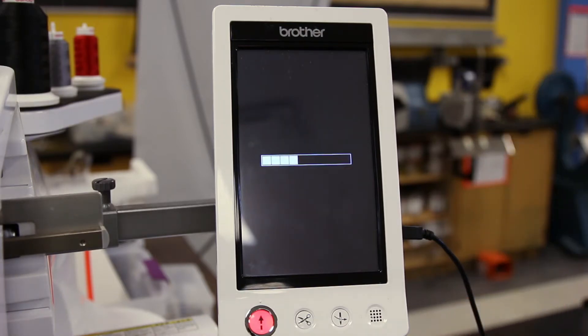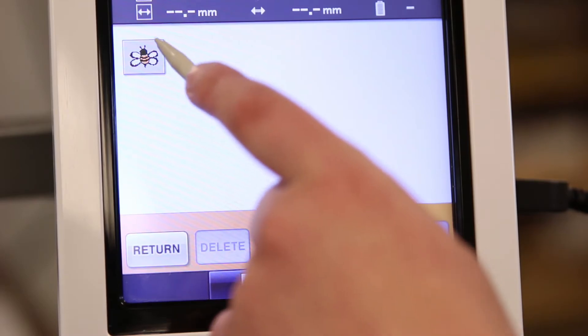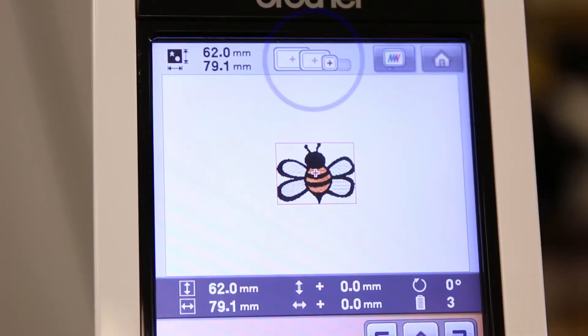Now that the design is on the machine, we can start by making the physical patch. Select and size the patch, noting the size of the hoop you will be using.